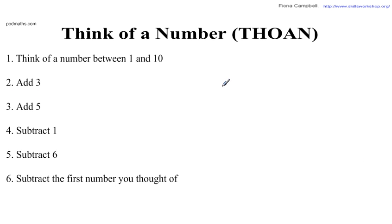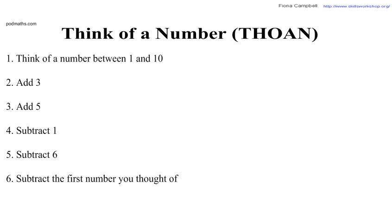You've probably seen this kind of activity before. Think of a number between one and ten — keep that in your head. Add three to that number, then add five to the result. Now subtract one from that, add six to it, and finally subtract the number that you first thought of. If I was a little fast, feel free to pause the video. What you should have found is that the answer, regardless of the number you started with, was one.